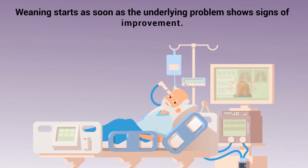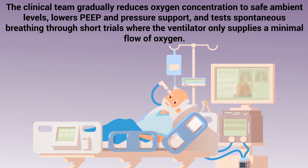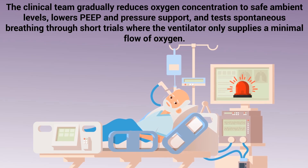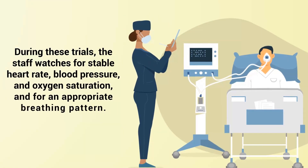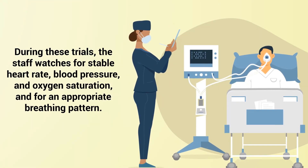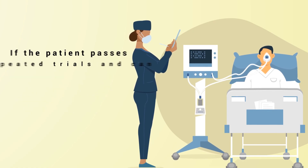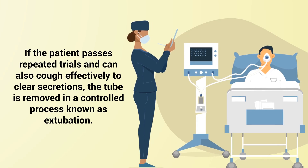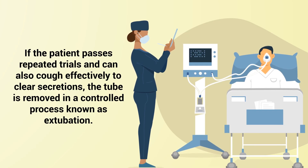Weaning starts as soon as the underlying problem shows signs of improvement. The clinical team gradually reduces oxygen concentration to safe ambient levels, lowers PEEP and pressure support, and tests spontaneous breathing through short trials where the ventilator only supplies a minimal flow of oxygen. During these trials, the staff watches for stable heart rate, blood pressure, and oxygen saturation, and for an appropriate breathing pattern. If the patient passes repeated trials and can also cough effectively to clear secretions, the tube is removed in a controlled process known as extubation.